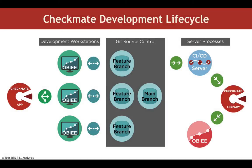I know that's a dense slide, so let's dive into it. On the left, we see development workstations — that's the main topic for today. You also see the Checkmate application beside it, and in the middle, Git source control. These workstations are pushing content back and forth from source control. On the far right, you see the server processes: a continuous integration and delivery server, the Checkmate libraries functioning inside that server, and an Oracle Business Intelligence server instance.